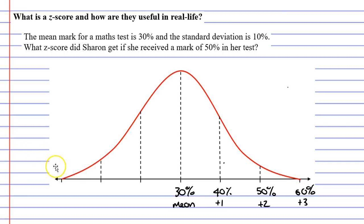The reason we label them this is because we've added the standard deviation once when we got 40%. To get 50%, we added the standard deviation twice.